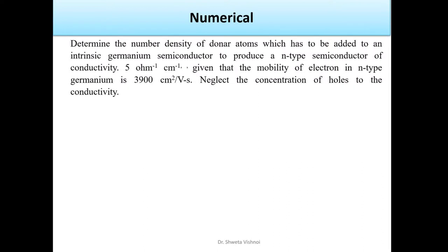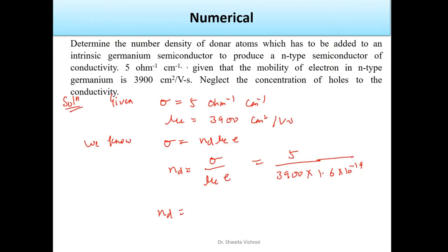In n-type semiconductor, there is no contribution of holes. So we have to use the expression of conductivity. σ = 5 Ω⁻¹cm⁻¹ and μe = 3900 cm²/V·s. The conductivity of the n-type semiconductor is dominated by the donor, so the suffix is given by d, giving σ = Nd·e·μe.